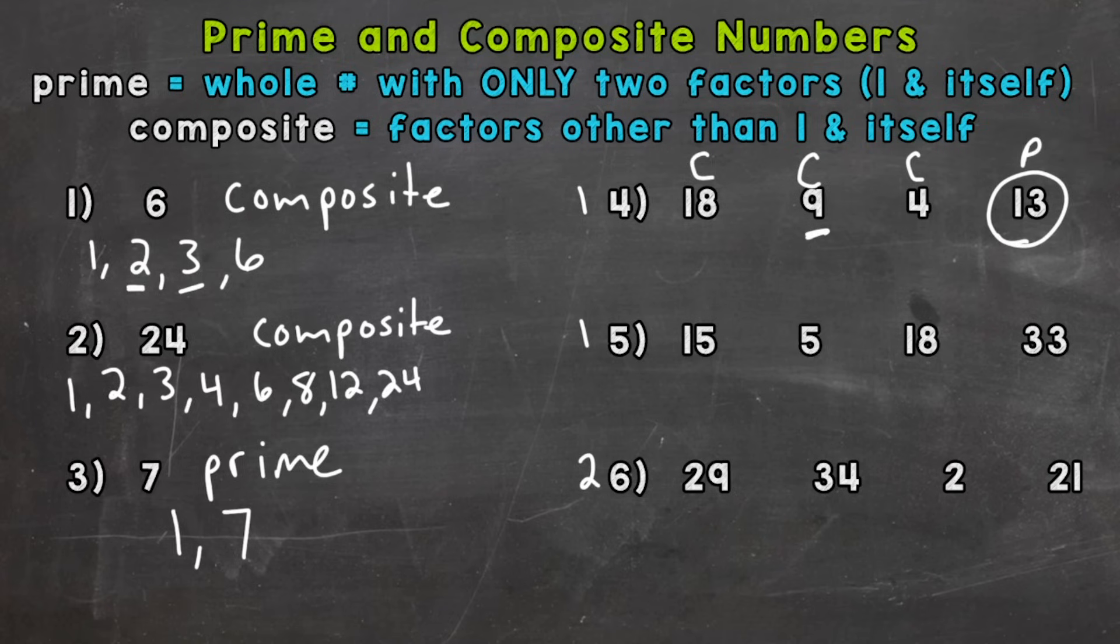Let's take a look at number five. Fifteen. Again, don't just think because it's odd that it's going to be a prime number. One and fifteen. Also three and five are factors. Five times three, or three times five equals fifteen. So fifteen is composite.